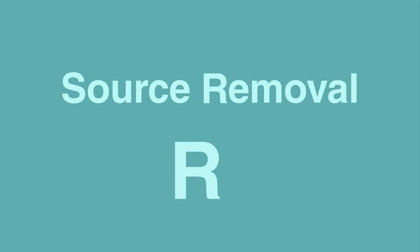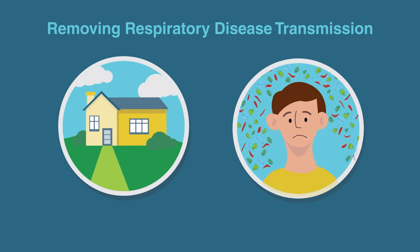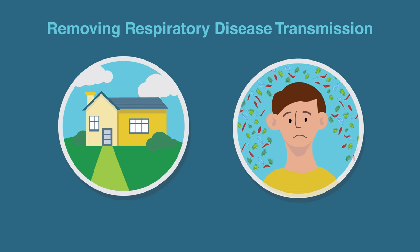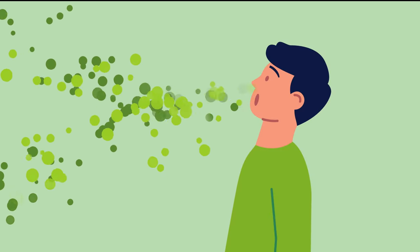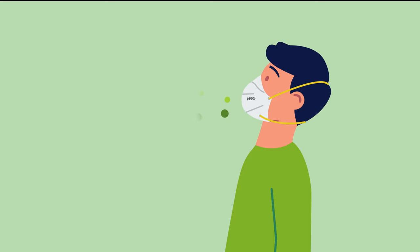We also don't want to forget about the other two R's — Source Removal and Source Reduction. When it comes to respiratory disease transmission, removal can be as simple as having people who feel ill stay at home. For some diseases, however, including COVID-19, people can be infectious even if they're not experiencing any symptoms. Source Reduction includes encouraging the wearing of high-quality, well-fitting masks, which can reduce the number of infectious particles a sick person spreads to the room, although masks can vary tremendously in terms of effectiveness.